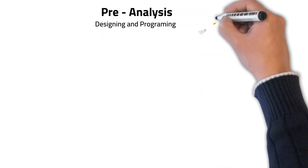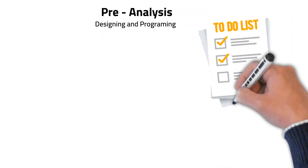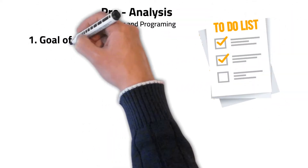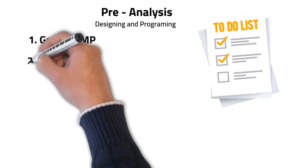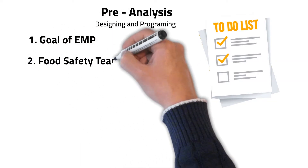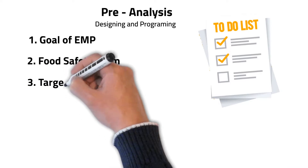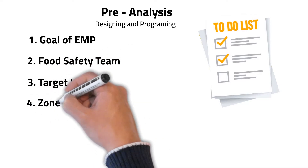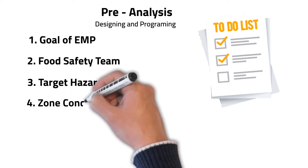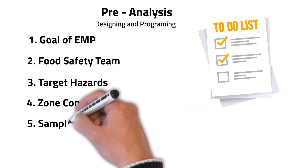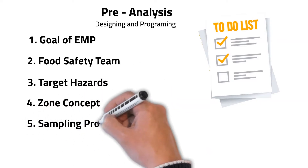Your first task will be to design and program the EMP, so please pay attention to these five criteria as a beginner: understanding environmental monitoring program goals, gather a food safety team, walk around the processing line to identify hazards, try to identify the risk-based zoning concept, and finally create scientifically recognized sampling methods.